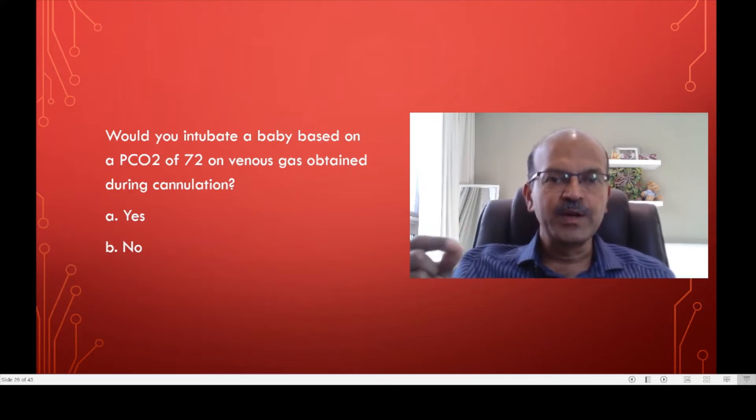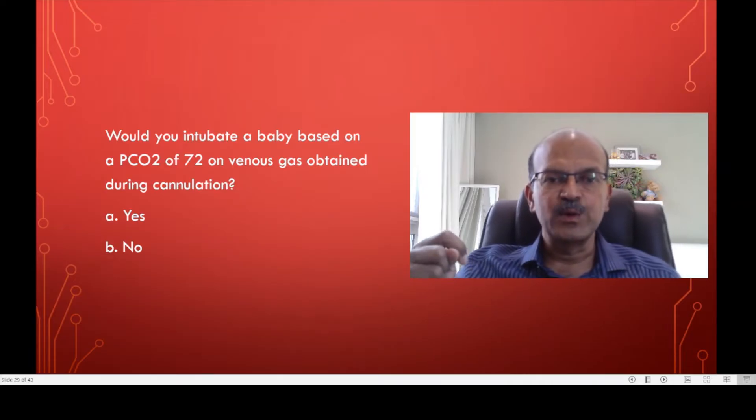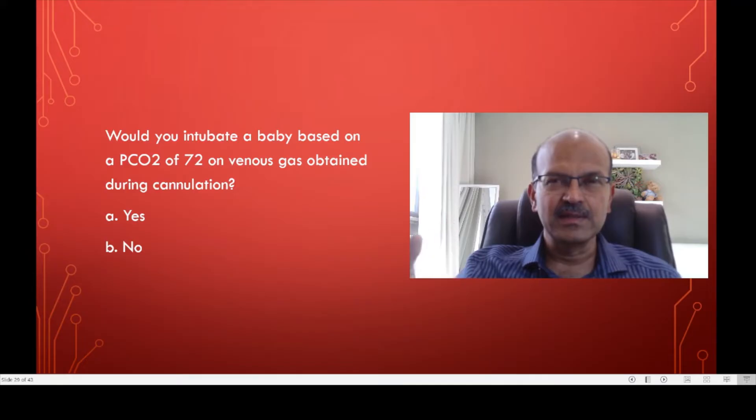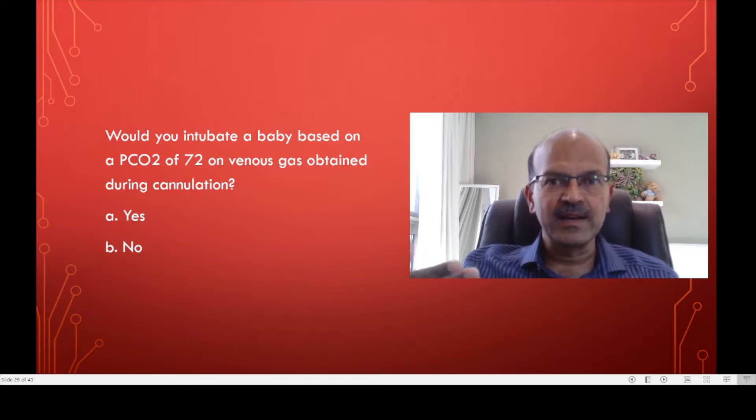In this case, would you intubate a baby based on a PCO2 of 72 on a venous gas which is obtained during cannulation? This is the only acceptable situation when we take a venous gas. If you are taking a blood sample for another reason, you want to avoid unnecessary sampling or pricking of the baby. So you may take the venous gas and use it as a baseline.